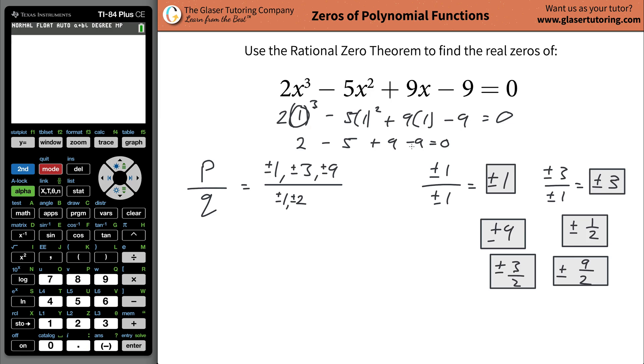So I know positive 1 is not a zero of the function. Now we got 11 left. This is going to get ridiculous if you have to do guess and check. So what you really want to do at this point is use the calculator to kind of have an idea of what the zeros will be.